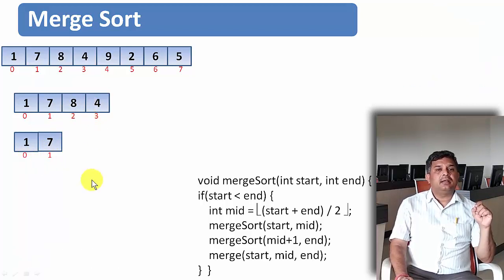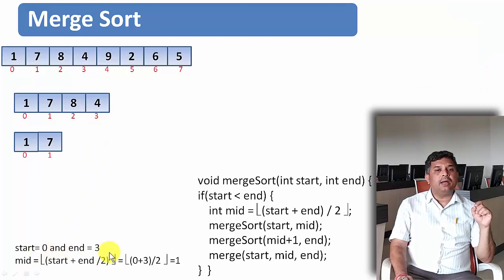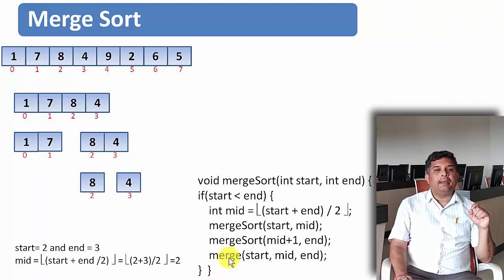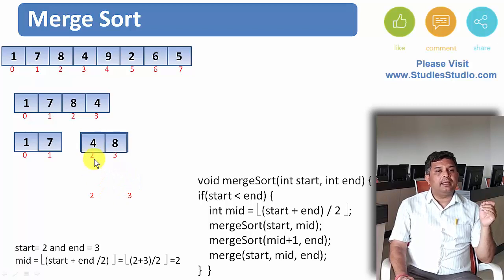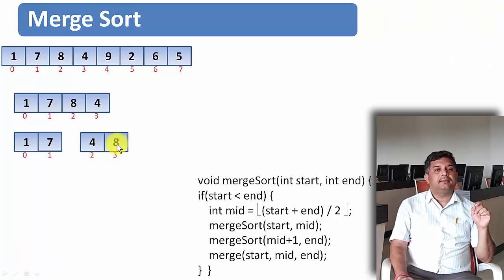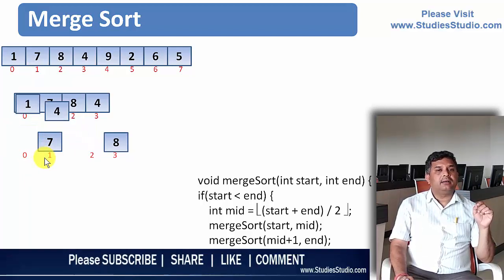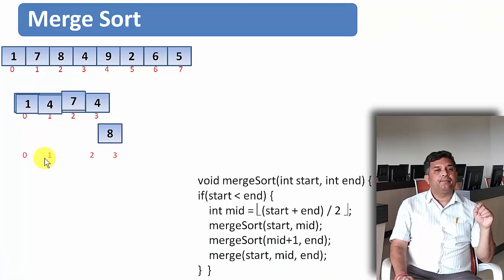We now have two sorted sublists [1,7] and [4,8], and we merge them. Applying the merge algorithm gives us the sorted list [1, 4, 7, 8] stored at index 0 to 3. Now we process the second half with index 4 to 7: start=4, end=7, mid=5. The first sub-half contains index 4 and 5, which are 9 and 2. With start=4, end=5, mid=4, we get single elements 9 and 2, merge them to get [2, 9] at locations 4 and 5.